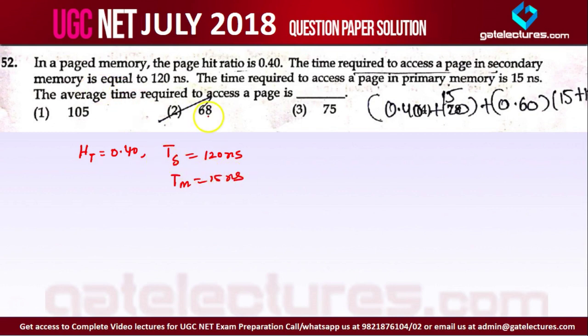The average time required to access a page is what? Simply the formula is the same which is used in cache memory or in average access time - that is first you search for the page in the main memory. Hit ratio is 0.40, meaning 40% of the time the page is found in the main memory. 0.40 into 15.